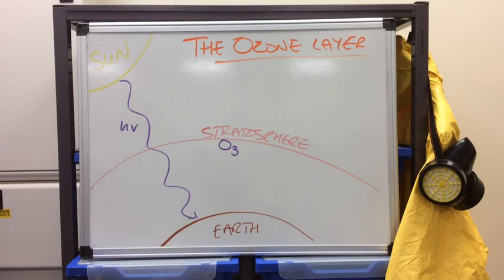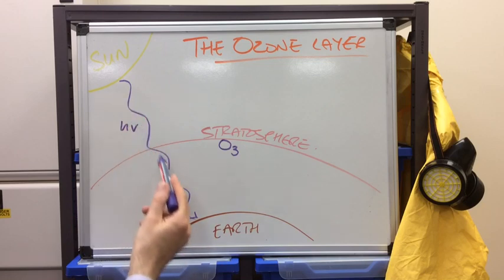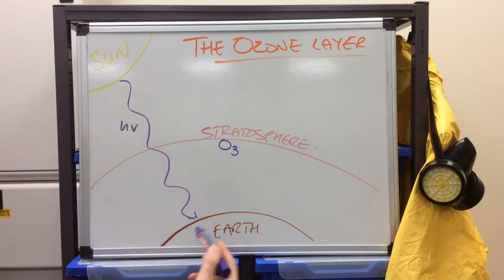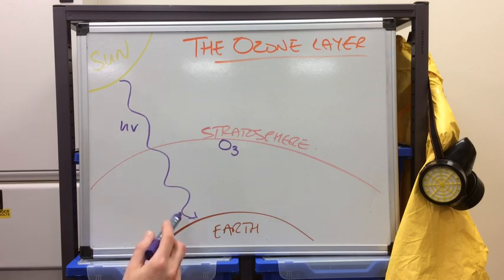If we think back to the greenhouse effect, remember the Earth absorbs the UV and then re-emits it as infrared. So if more UV reached Earth then obviously the Earth would heat up even more. But the other problem associated with UV is it's a very damaging form of radiation and it's very closely linked to skin cancer.